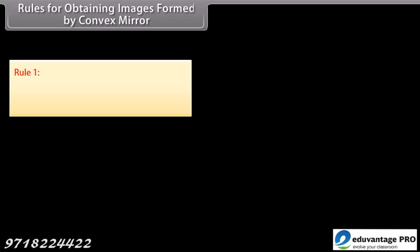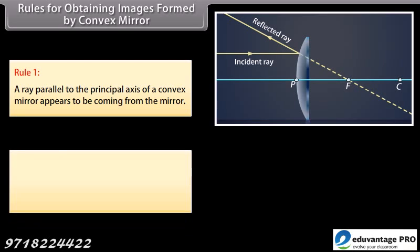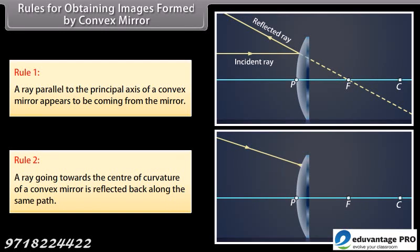Rules for obtaining images formed by convex mirrors. Rule 1: a ray parallel to the principal axis of a convex mirror appears to be coming from the focus behind the mirror. Rule 2: a ray going towards the center of curvature of a convex mirror is reflected back along the same path.